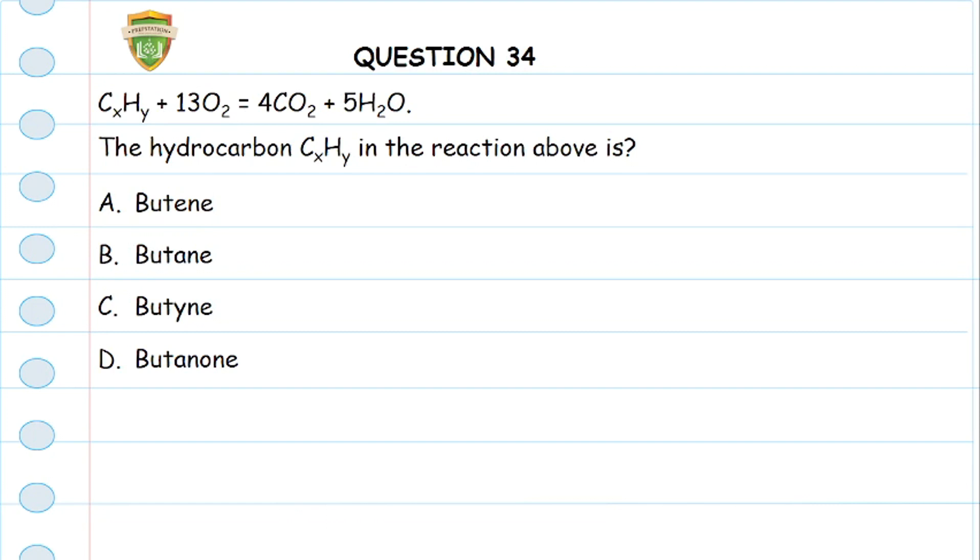Question 34: We have an equation here and we're given a hydrocarbon, but without the number of atoms. We don't know how many atoms are in this hydrocarbon, but we have this equation and we want to find the hydrocarbon. The first thing we're going to do is find the number of each of these atoms on the product side.